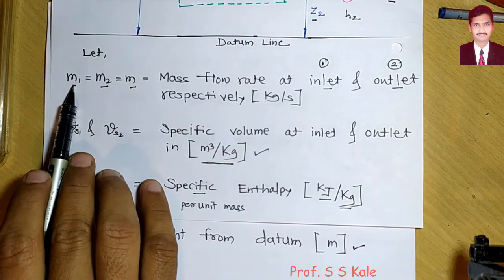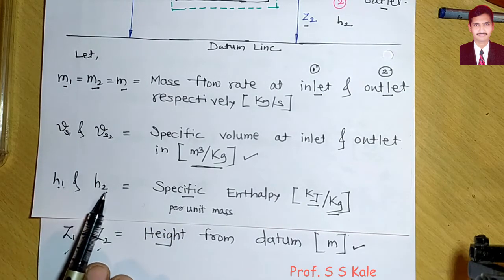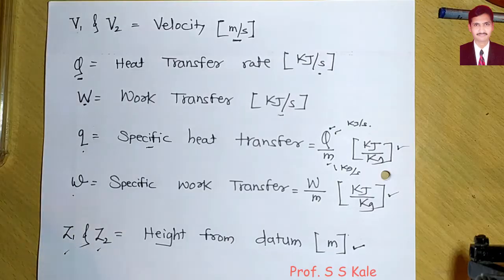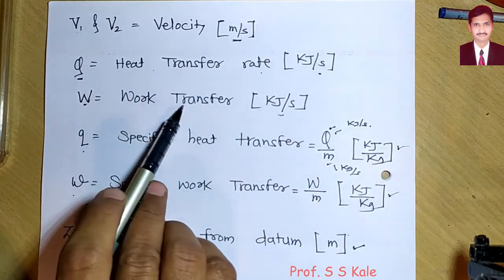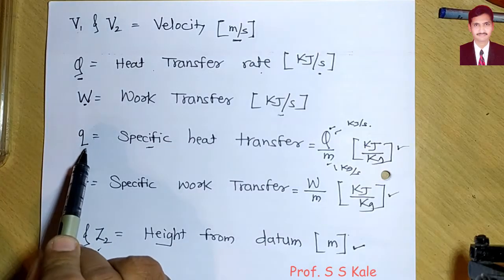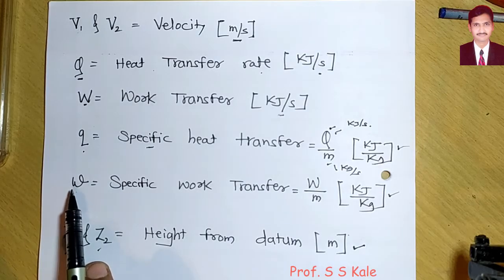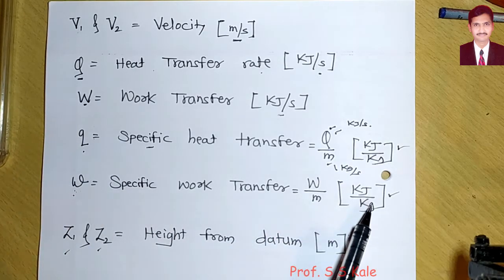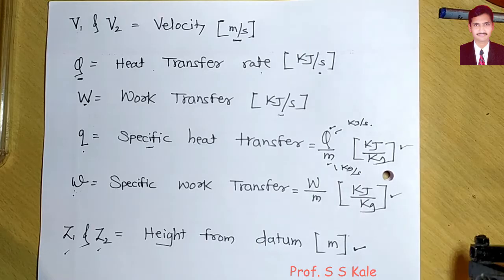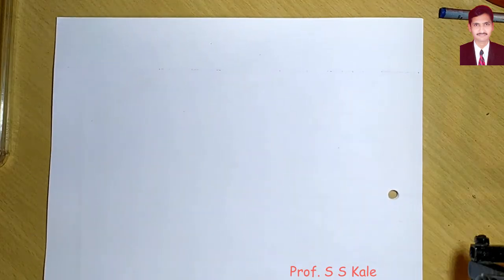To summarize the notation: m1, m2 are mass flow rates; Vs1, Vs2 are specific volumes; h1, h2 are specific enthalpies; V1, V2 are velocities; Q is heat transfer rate in kJ/s; W is work transfer rate in kJ/s; small q and small w are specific heat and work in kJ/kg; and z1, z2 are heights.